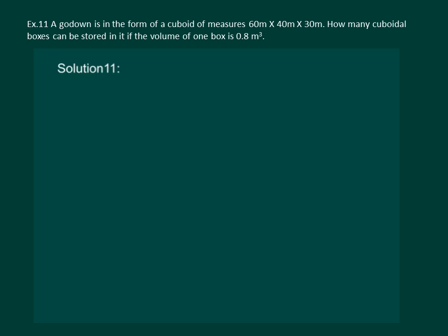From the question, we can see that godown is in form of a cuboid whose length is 60 meters, breadth is 40 meters, and height is 30 meters.